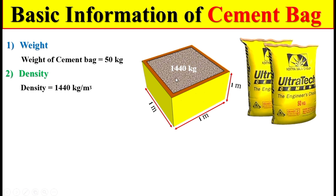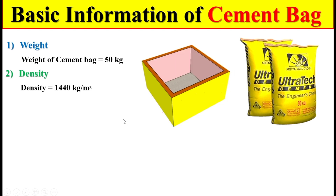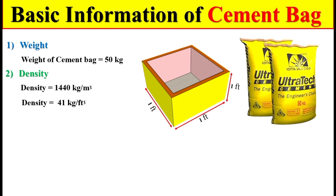If we fill this box with cement, the weight of that cement will be 1440 kg. Also remember that the density of cement is 41 kg per cubic foot. So if we have a volume of one cubic foot and fill it with cement, the total weight of that cement will be 41 kg.